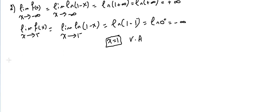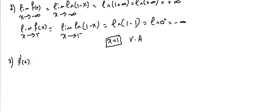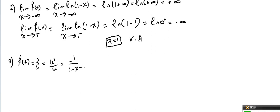Third step: we compute the derivative. f'(x) equals, for y = ln(u), the derivative is u'/u. The derivative of 1 - x is -1, so f'(x) = -1/(1 - x). Since 1 - x is strictly positive in the domain, this is negative over positive — negative. This means f is a strictly decreasing function.